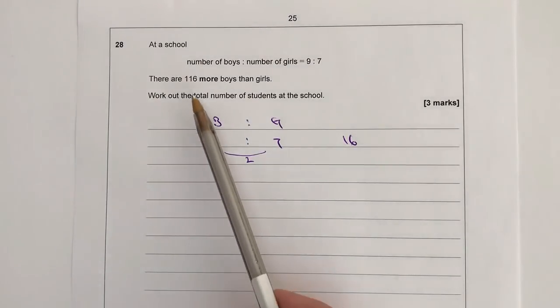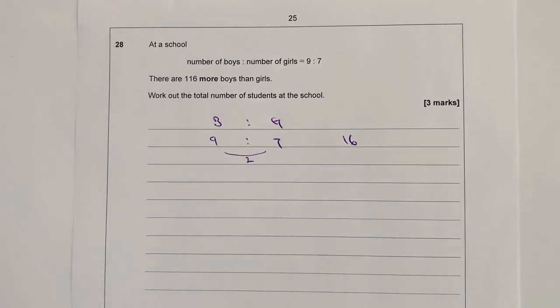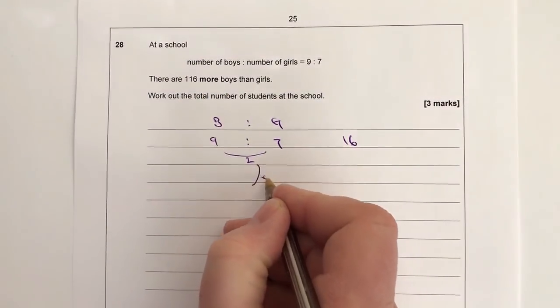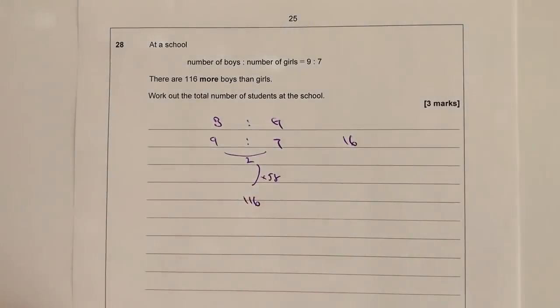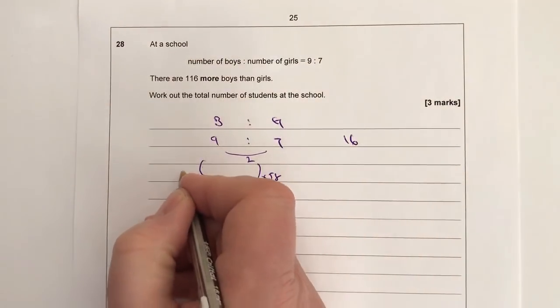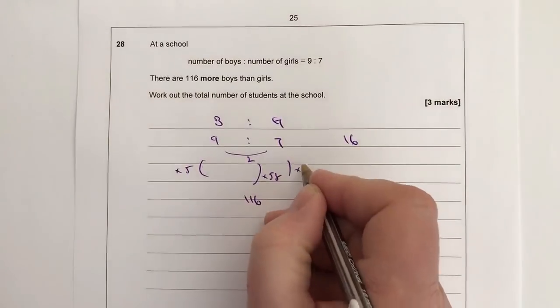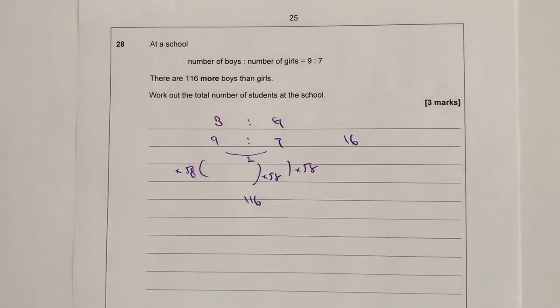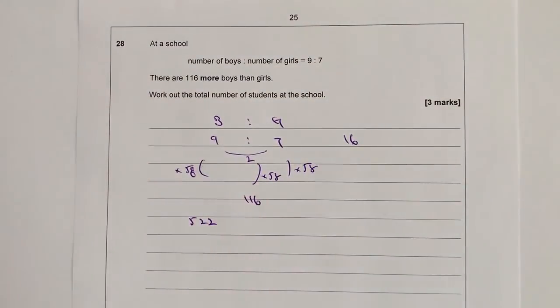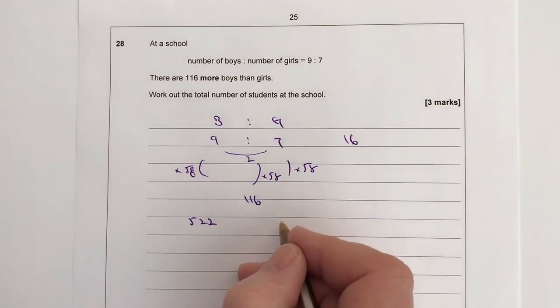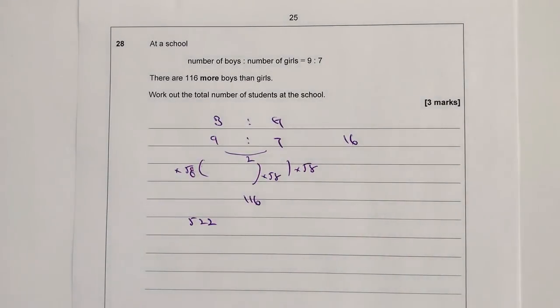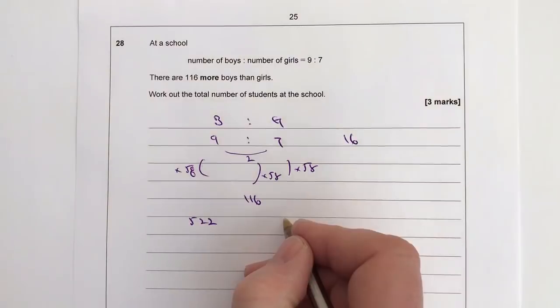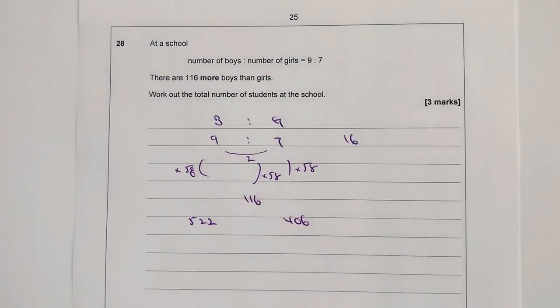So in other words, I've got to multiply that by 58, and that will then give me 116. Well, if that is the case, I've got to multiply everything else by 58 as well. So times 58. So if I multiply 9 times 58, I'm going to get 522 boys. And if I multiply 7 by 58, I'm going to get 7 by 58, which is going to give me 406. 406 girls.